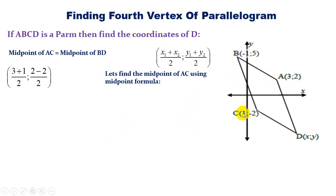So if we go back to AC, we're taking 3 plus 1 divided by 2, 2 minus 2 divided by 2. And that will give us 3 plus 1 is 4, 4 divided by 2 is 2. And 2 minus 2 is 0, 0 divided by 2 is 0.